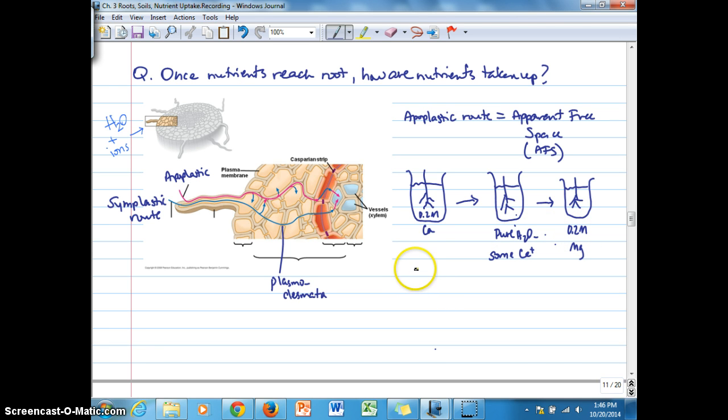This suggests that there is some kind of ion exchange happening within the apparent free space that is synonymous or similar to what happens between colloids and the soil solution, where cations are being exchanged for one another, depending on the concentration of the ions in the surrounding solution and most likely associated with a binding affinity series.